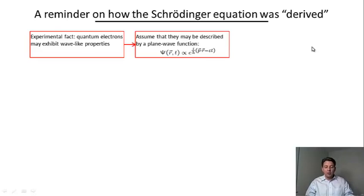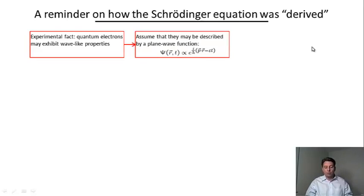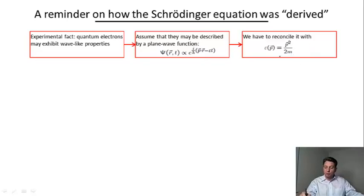To explain this we introduced in an ad hoc fashion a plane wave function which would explain the data. In this wave function we introduced the momentum and energy of the electron, which must be related using the dispersion relation—kinetic energy of a free particle, mv² over 2 or p² over 2m.